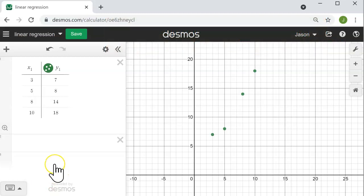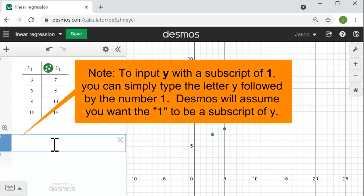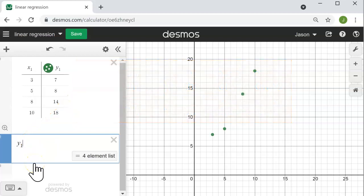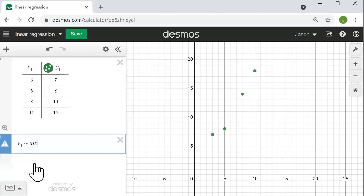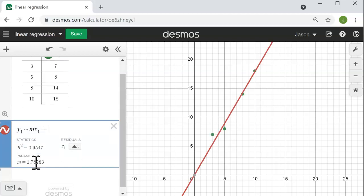To create a linear function that best fits those points, I can type y1 which creates y with a subscript of 1, and then press the tilde key and type in the form of a linear equation like mx1 plus b.